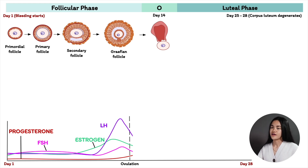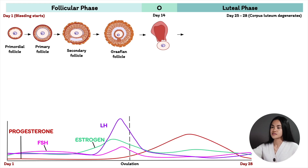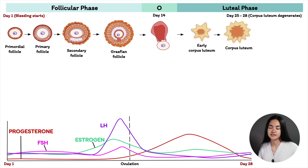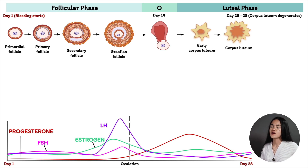Following ovulation is the luteal phase, days 15 to 28. After the Graafian follicle releases the secondary oocyte and antral fluid, the walls of the follicle collapse and are transformed into the corpus luteum. From days 15 to 25, the corpus luteum develops and matures, secreting large amounts of progesterone, estrogen, and the protein hormone inhibin. Progesterone plays an important role in ensuring the endometrium is ready for implantation of a blastocyst. The increase in progesterone and estrogen inhibits FSH and LH release, preventing new follicles from developing and preventing another LH surge. When the egg is not fertilized, the corpus luteum degenerates around days 25 to 28, marking the end of the luteal phase and the start of a new cycle.